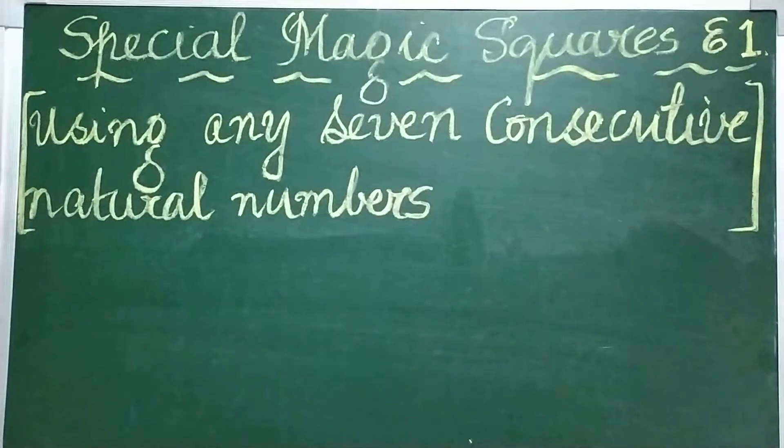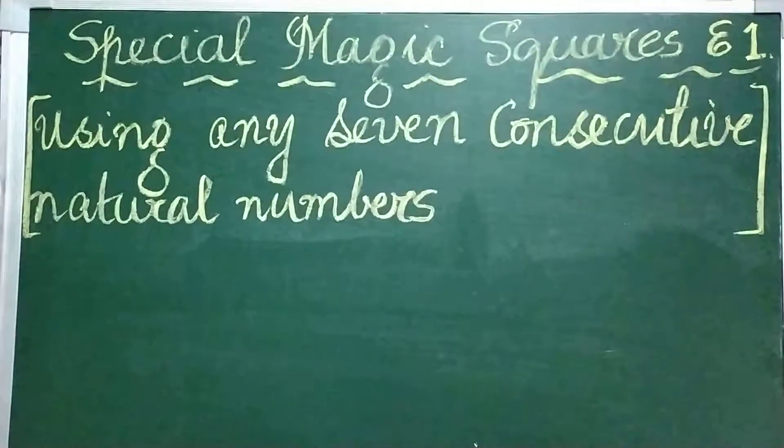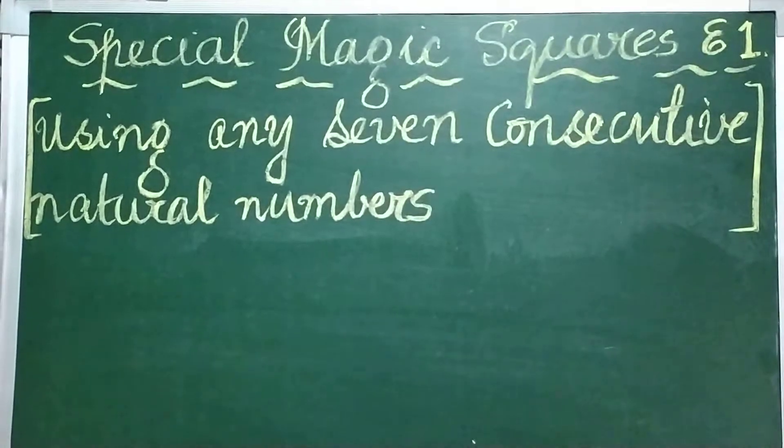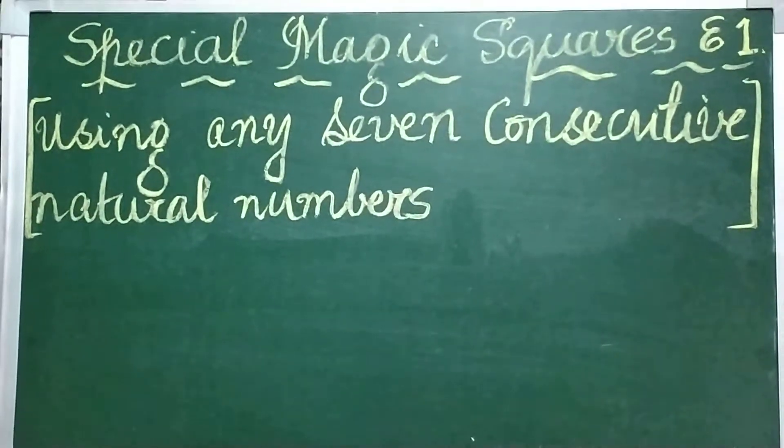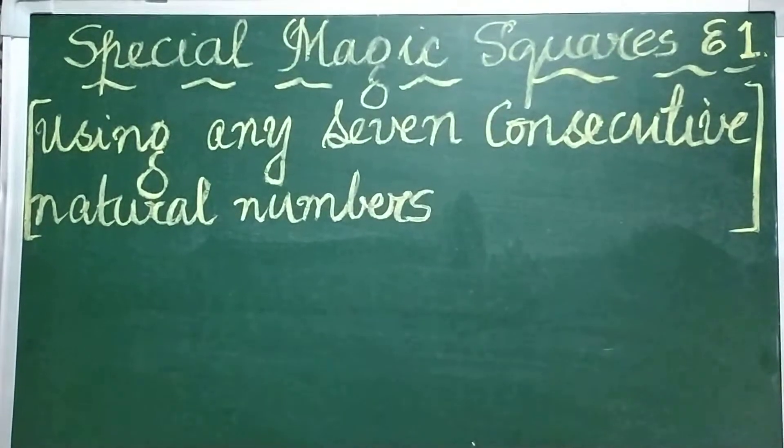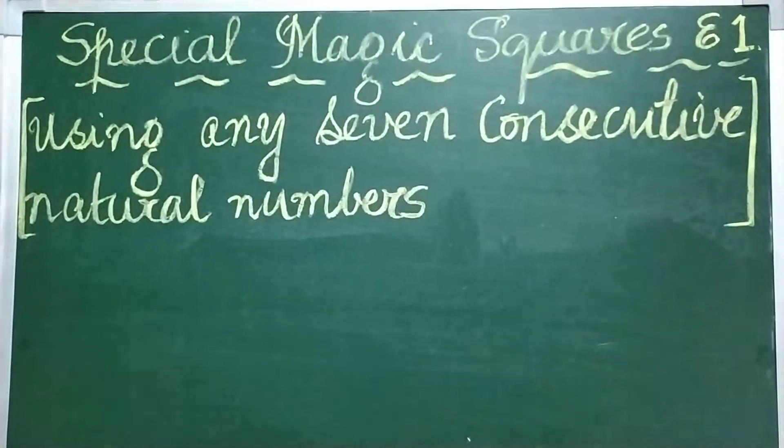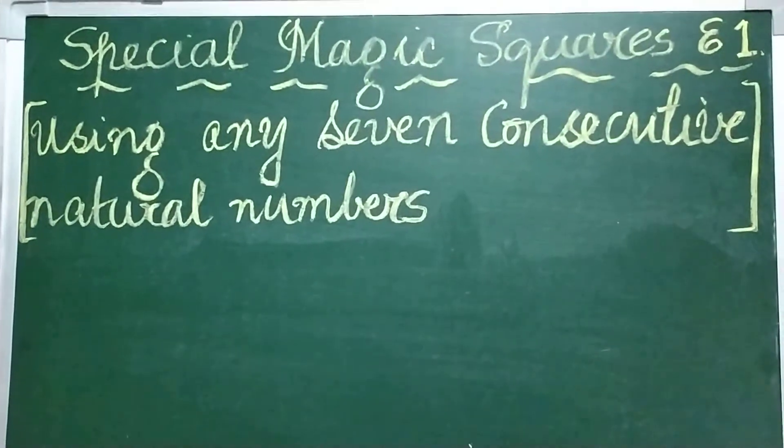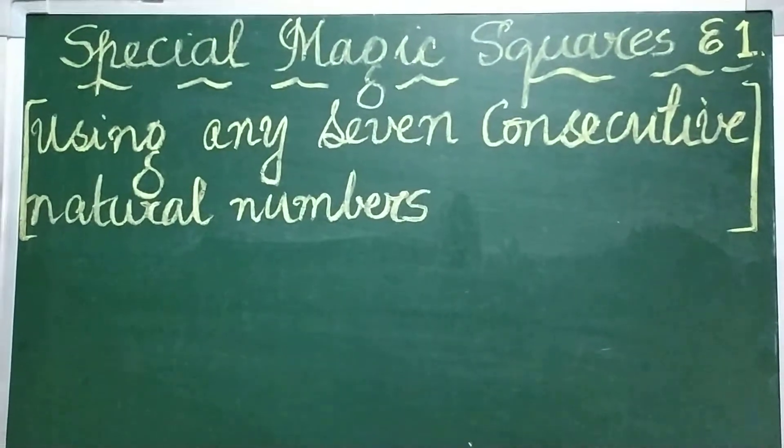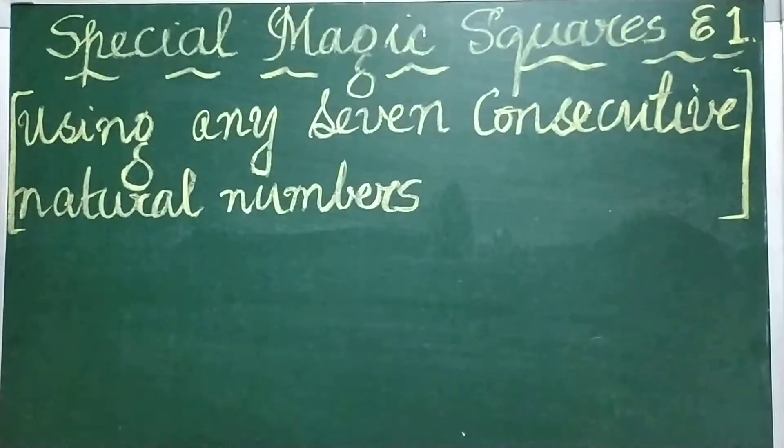Today, we will be learning about a special magic square, which is a 4 by 4 magic square constructed by using any 7 consecutive natural numbers.